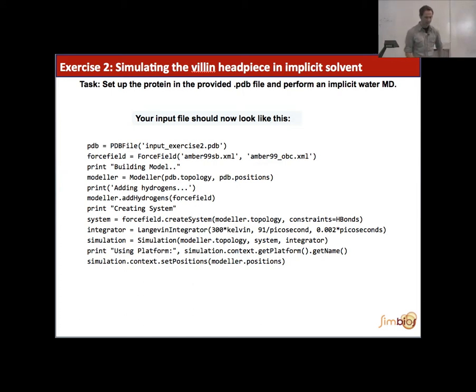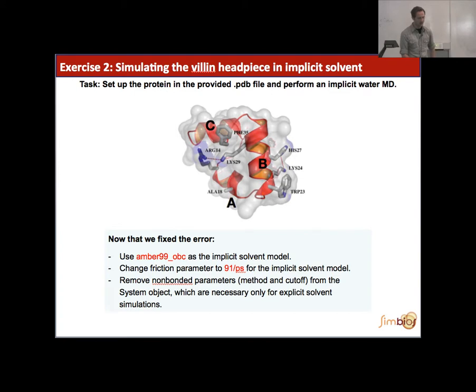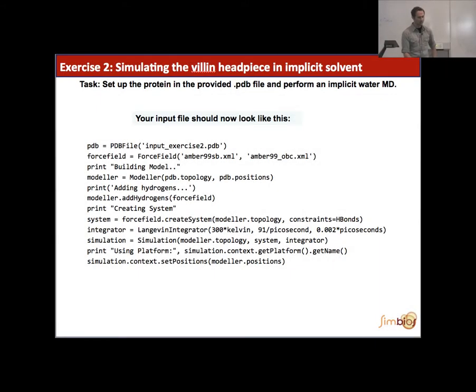And so, by a painful little trial and error kind of exercise, you pretty much converted into a code that looks something like this, where you not only built the model, but you also changed the water from TIP3P to Amber99-OBC, according to that word handout that Joy sent you last night. And when you do that, when you move from an explicit water molecule system to an implicit solvent system, the friction parameters will change as well. So, we had one per picosecond in the explicit case, and now it has to be at 91 per picosecond for this particular force field.